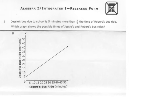On this question, Jesse's bus ride to school is five minutes more than two-thirds the time of Robert's bus ride. Which graph shows the possible times of Jesse's and Robert's bus rides?